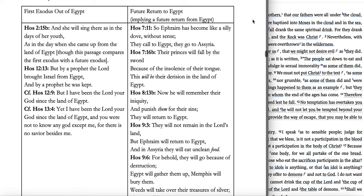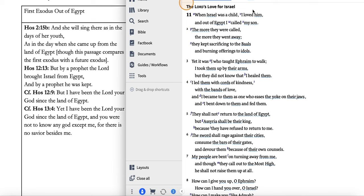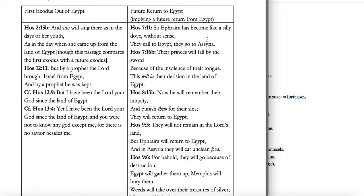On the right side, there is a future return to Egypt, implying a future return from Egypt. Hosea 7:11 says, 'Ephraim has become like a silly dove without sense. They call to Egypt, they go to Assyria.' Hosea 7:16: 'Their princes will fall by the sword; they will be their derision in the land of Egypt.' So if you're going to have a return from Egypt as Hosea 11:1 says — 'Out of Egypt I called my son' — and you have a return to Egypt, then to come out of it afterwards you have to go back into it.